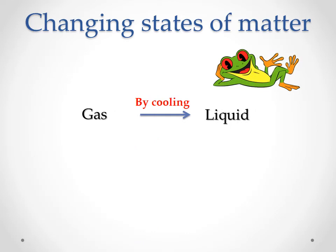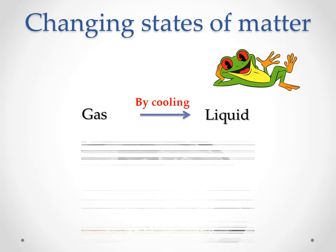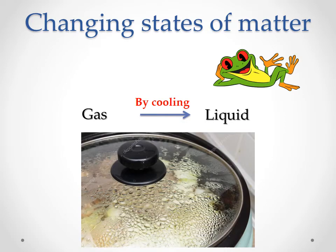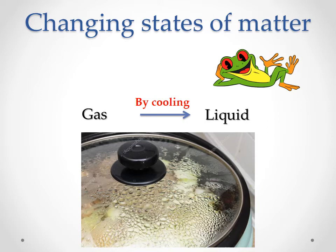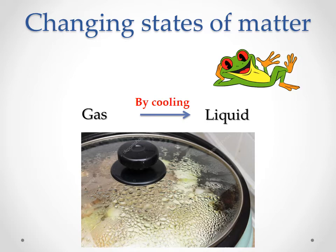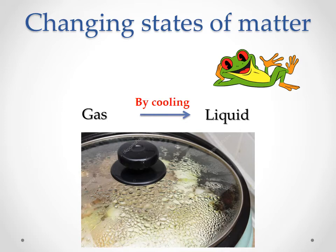Now, how can we change the gaseous state to liquid state? As shown in the figure, when you cook and remove the lid from the pot, you can see water on the lid. Where does the water come from? The water vapor coming out from the pot hits the lid and turns back to liquid. So gaseous state changes to liquid state.